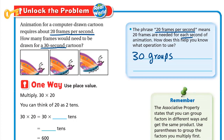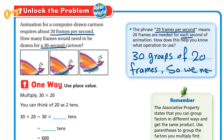So it's 30 groups of 20 frames. Instead of adding 20 thirty times — 20 plus 20 plus 20 — we know that repeated addition is multiplication. So we need to multiply 30 by 20.